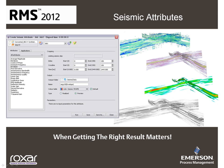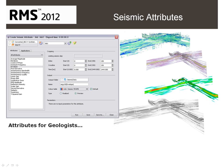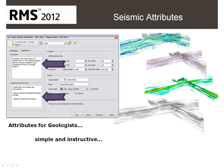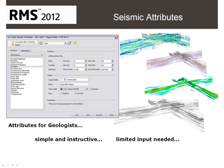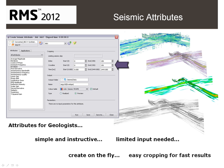Originally a tool used exclusively by geophysicists, RMS brings the functionality right into the geologist's domain, with the simple and instructive interface providing descriptions and suggested uses for each attribute. Limited input is needed to output the attribute as a realized cube, or for a quick overview as slices created on the fly using the preview mode. The cube can be cropped easily to the area of interest for an even faster calculation.